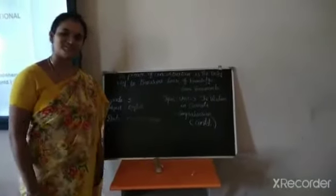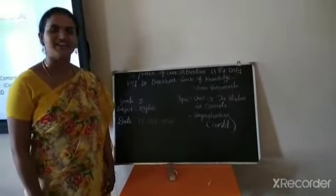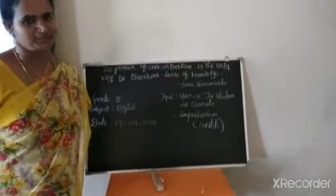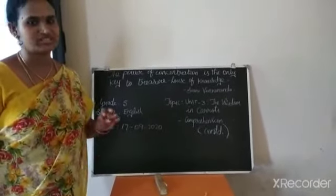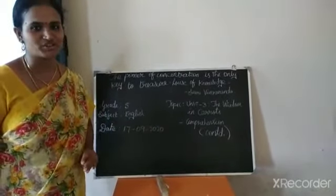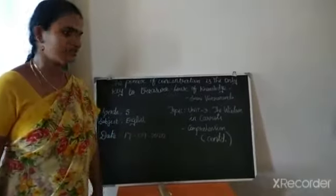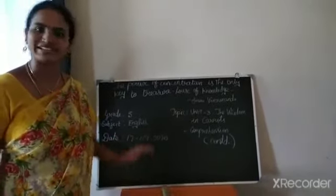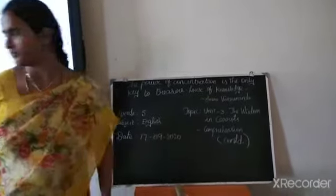Namaste children, welcome to grade 5 English class. In the previous class, we saw the comprehension — the first degree comprehension of the lesson 'The Wisdom and Carrots.' So we are going to see the rest of the questions in today's class.